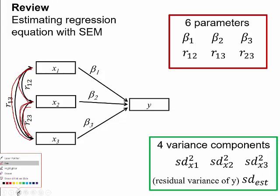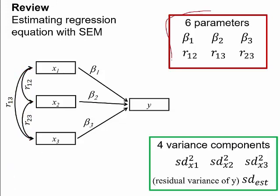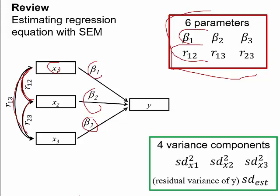This model has six different parameters we are estimating. We estimate three beta weights — beta 1, beta 2, beta 3 — the beta weight for each x variable when predicting y. Our model also includes three correlations: x1 with x2, x2 with x3, and x1 with x3. So we have three beta weights and three correlations being estimated.